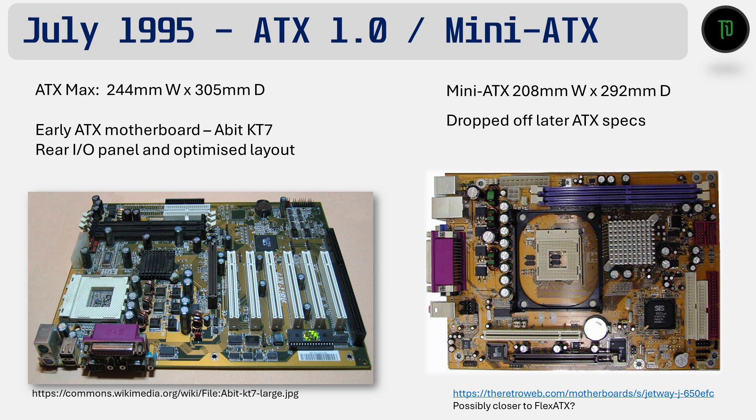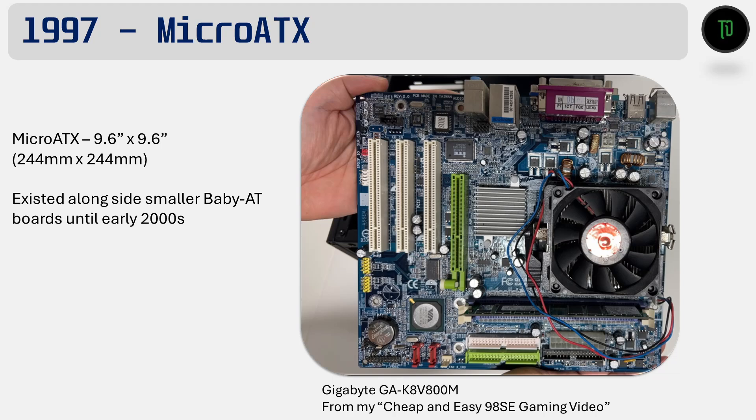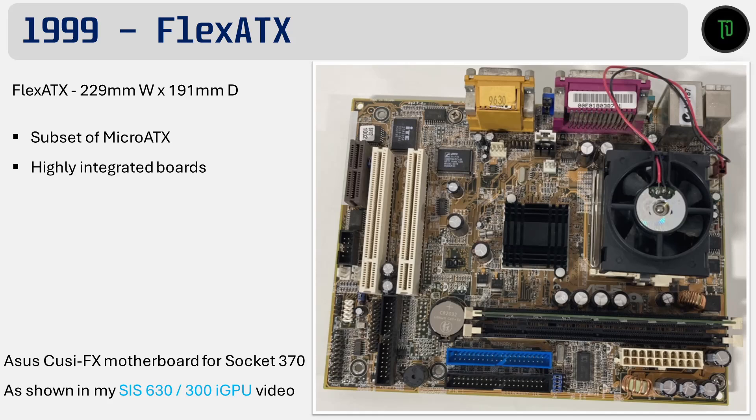Intel also proposed the Mini ATX standard as a means for cost and size reduced boards, with a maximum size of 208 by 292 mm, and it was used in small form factor bare bones PCs. Intel dropped it from future revisions of the ATX spec, but didn't stop a few manufacturers like Jetway continuing on with it anyway. In 1997, Intel introduced Micro ATX as a subset to the ATX format, setting the maximum size at 244 by 244 mm. Micro ATX boards tended to be highly integrated, have less expansion slots than the larger format boards, and continued to be targeted towards the smaller, budget-focused consumer. In 1999, Intel went another step further and introduced Flex ATX, with a maximum size of 229 by 191 mm, for even smaller configurations targeted at size-sensitive applications while retaining case compatibility, expansion and upgradability options.